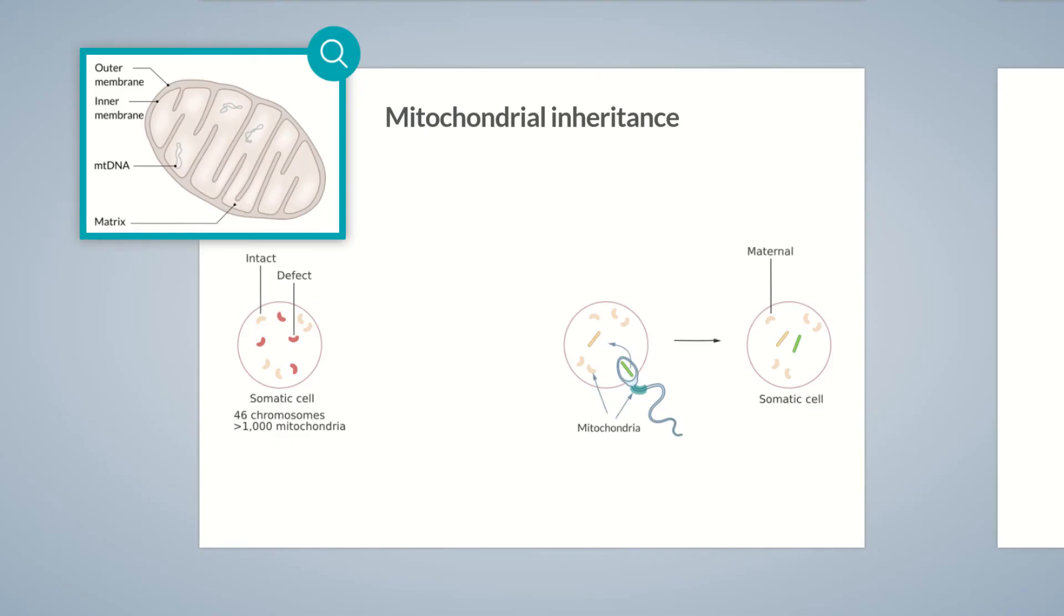Since mitochondria are randomly distributed to daughter cells during cell division, the new cells cover a wide range of phenotypical variants. Some of these germ cells provide the basis for healthy offspring, whereas others result in severely affected offspring.